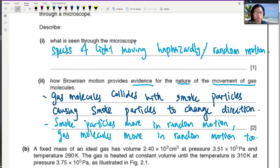So this is Brownian motion. The whole idea of Brownian motion is that we can see smoke particles traveling haphazardly. And because of this, we can say that because the smoke particle collides with gas molecule, if smoke particle moves haphazardly or randomly, then gas molecules also move in the same fashion. All right, so let's look at part B.